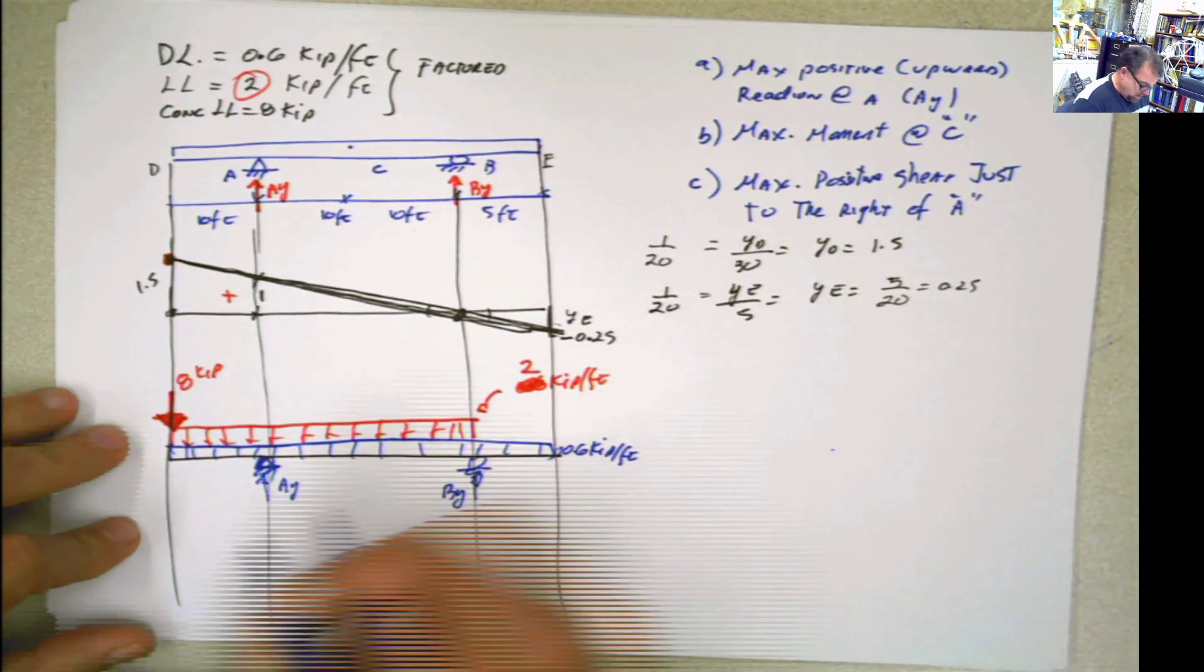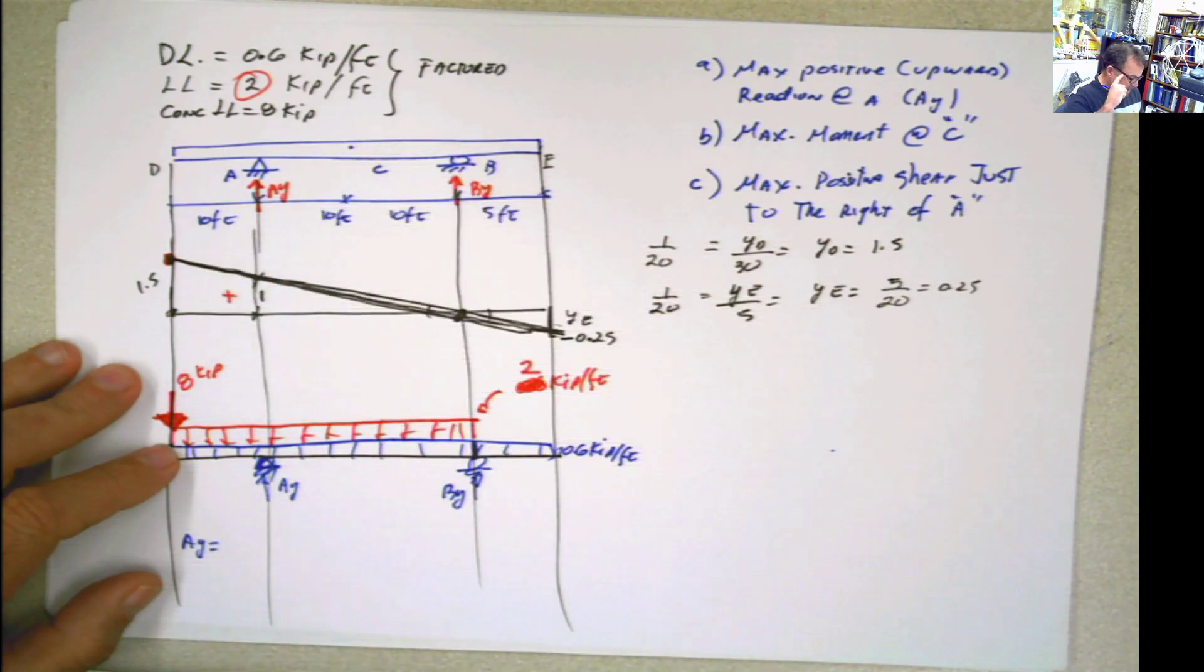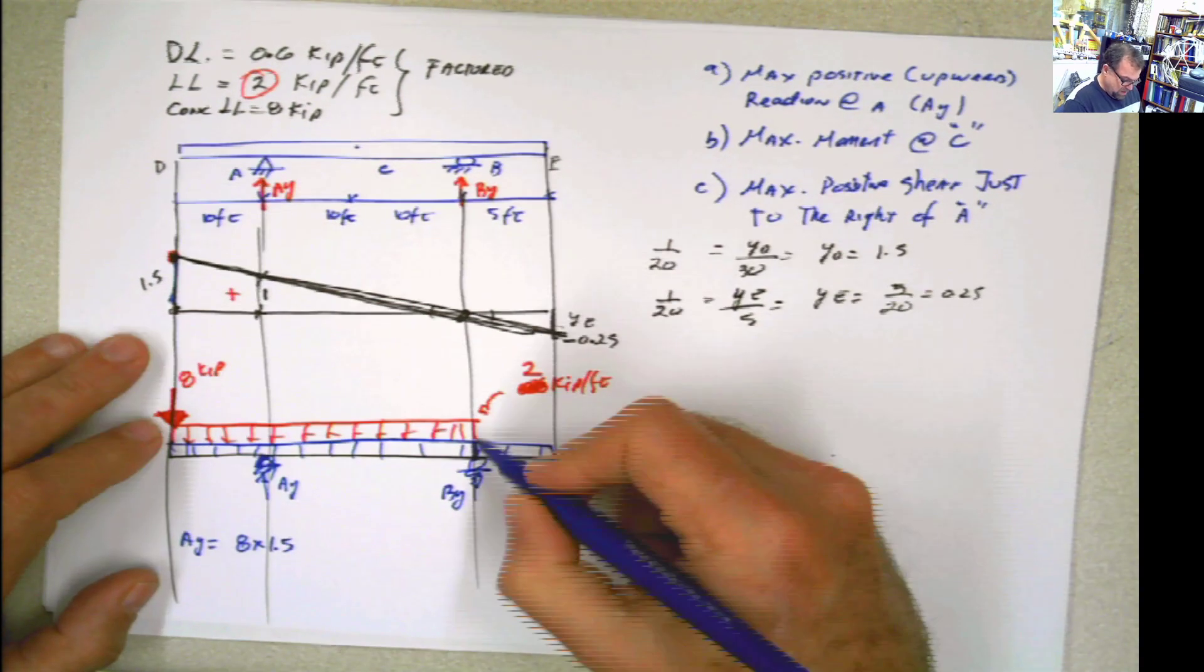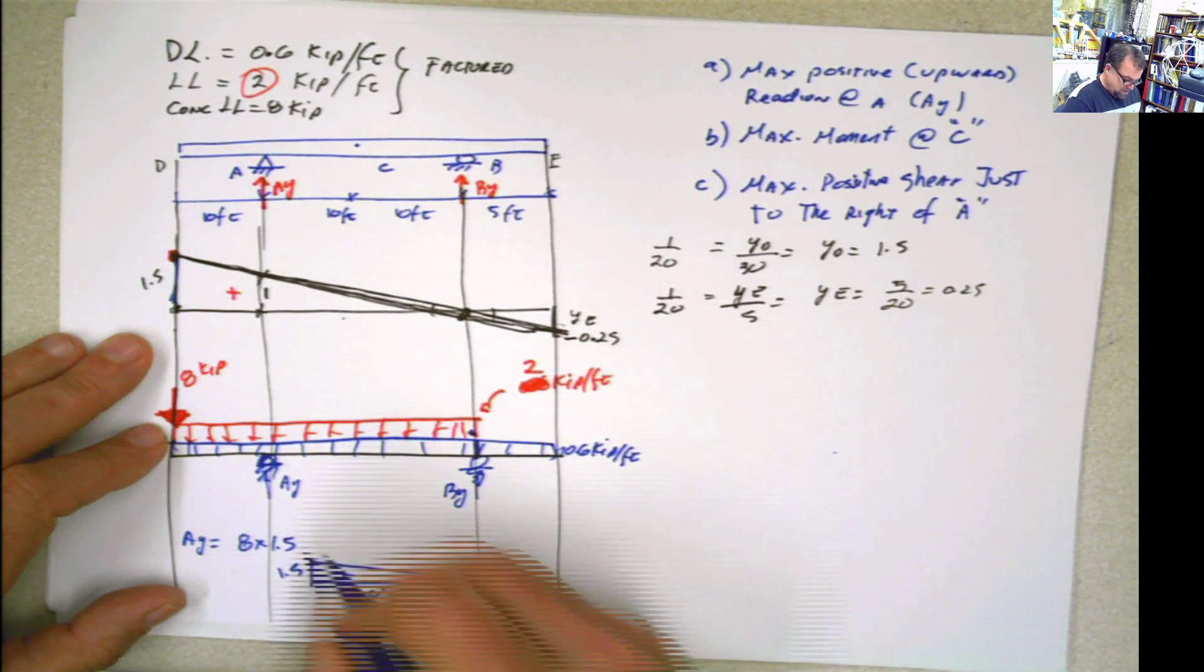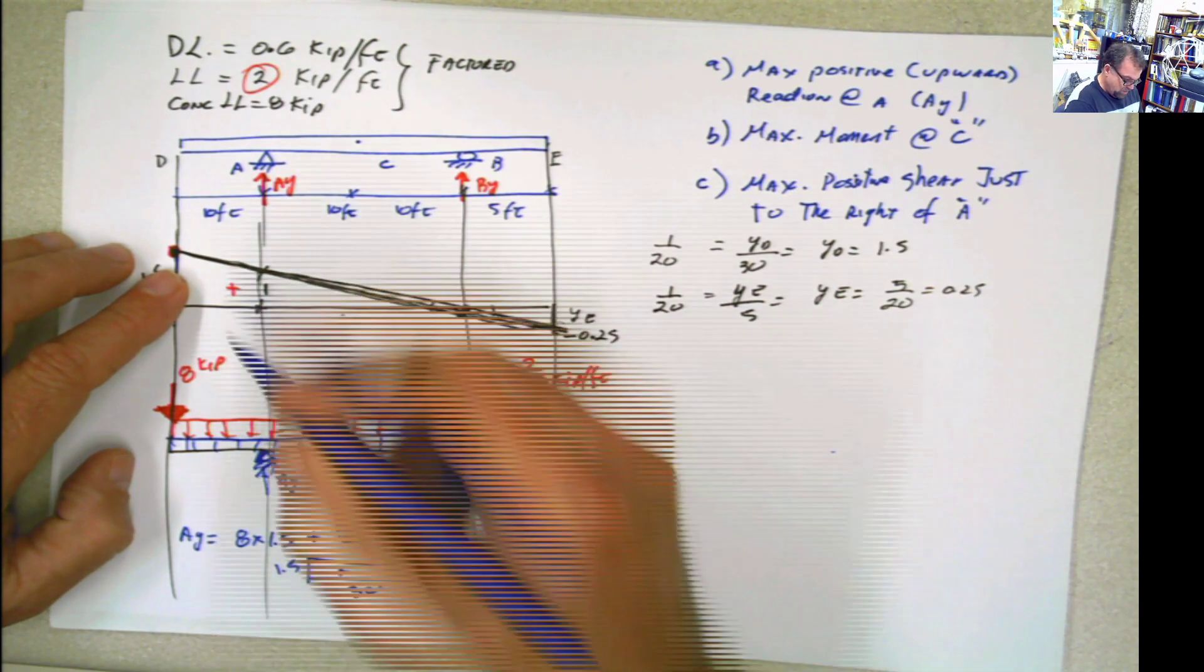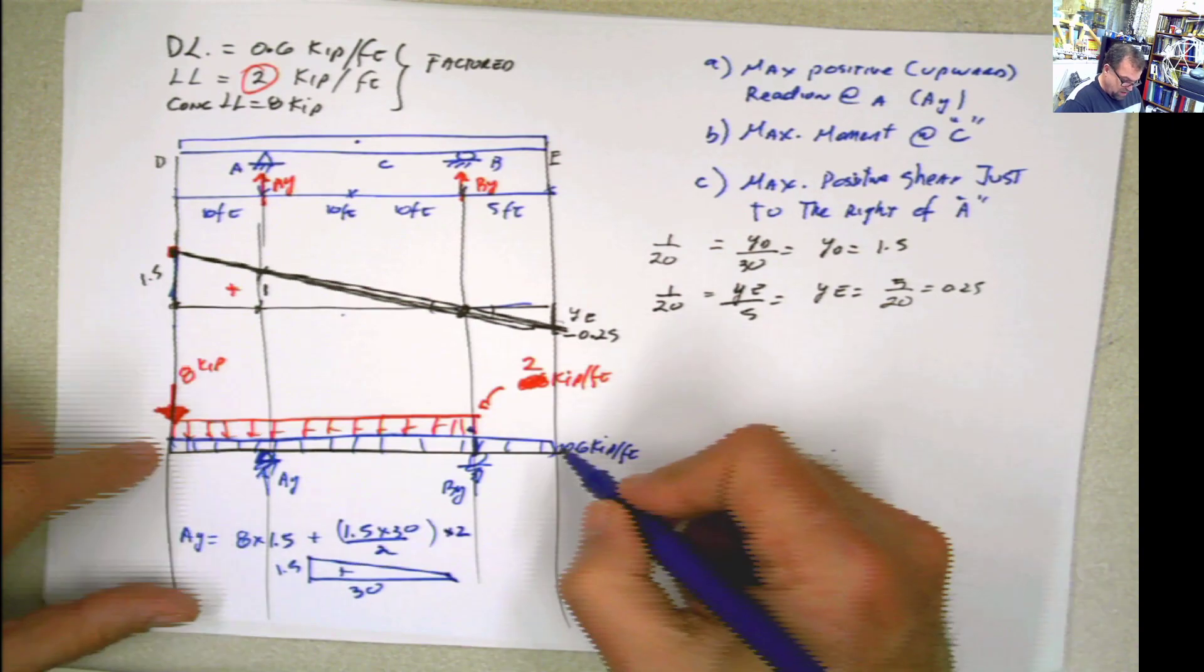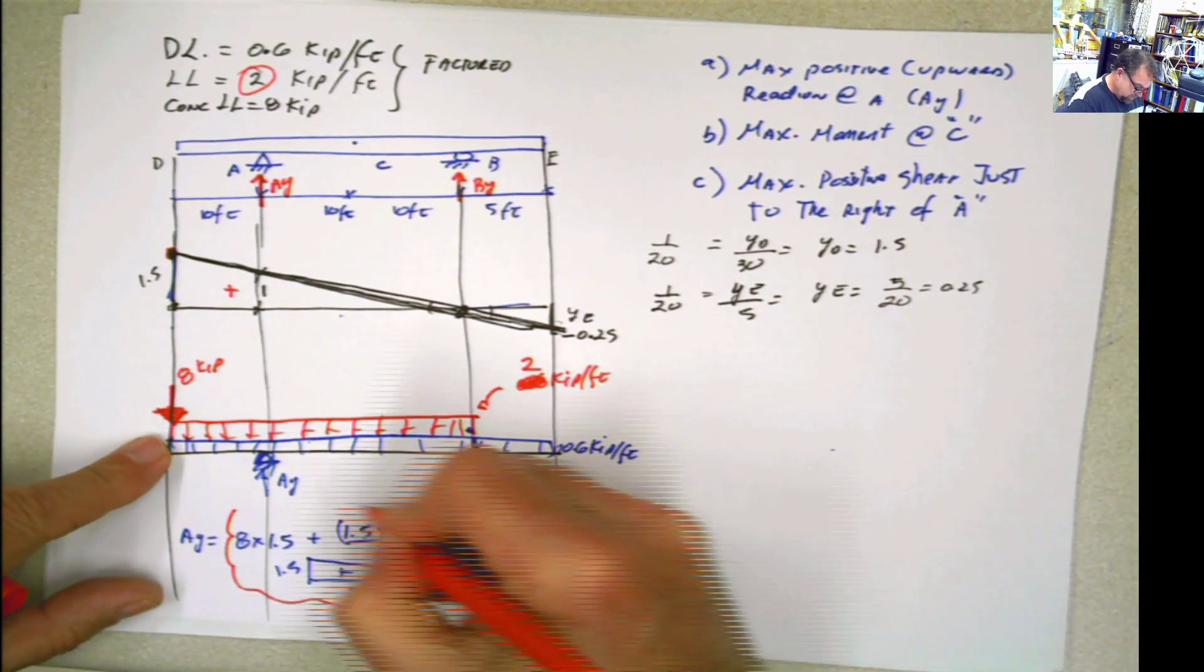Now, how do we find the maximum value, overall upward value for AY? AY is going to be equal to all this area. But remember, this part is positive. So this area, the area of the triangle, let's start with this. 8 times 1.5, the concentrated load times the ordinate here, 1.5. Now, we have this other part here. This other part here is this area, the area of this triangle, 1.5. And this is 30, positive area. So plus 1.5 times 30 divided by 2, which is this part. Multiply that by the live load, which is 2. And then that's all for the live load.